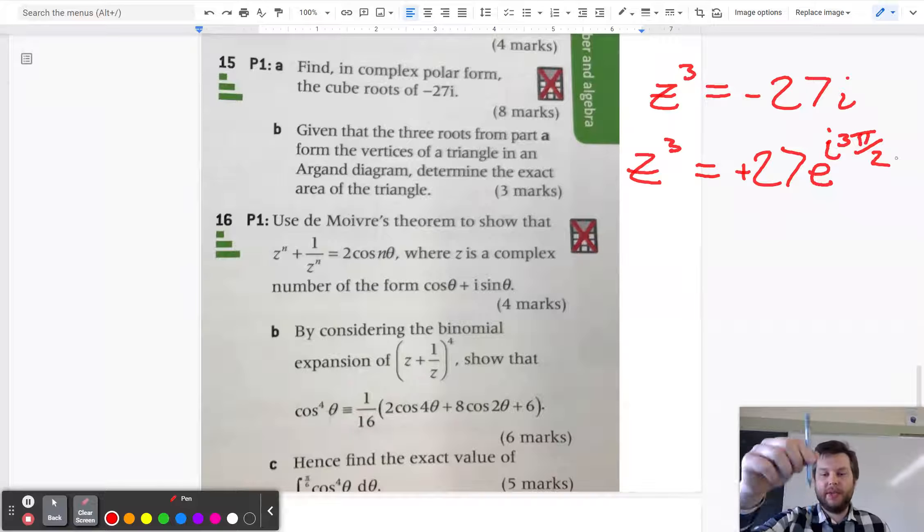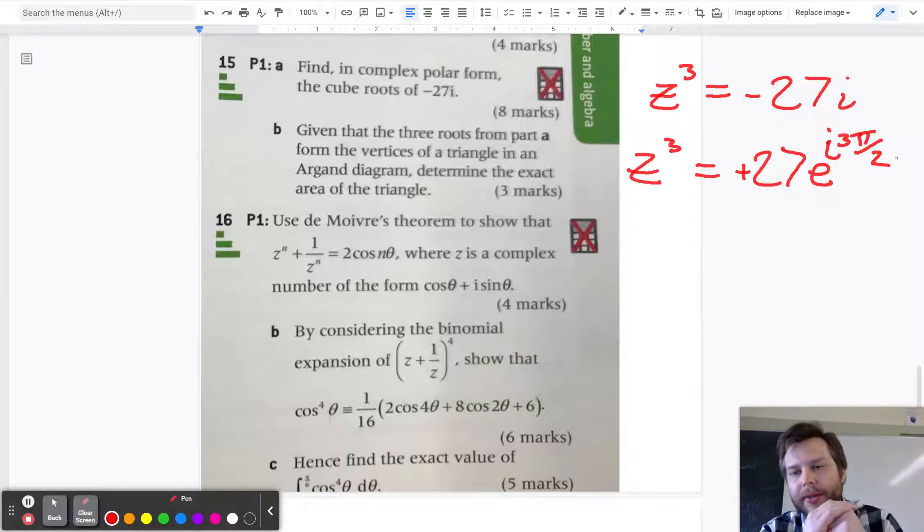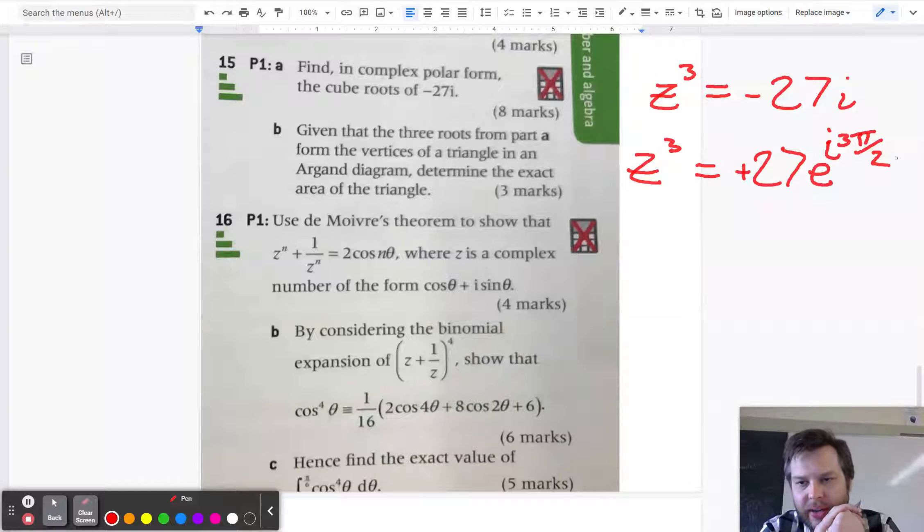Because negative 27i is moving due south on the unit circle, and so that's an angle of 3 pi over 2. Or I could have used equivalently negative pi over 2 as the angle.